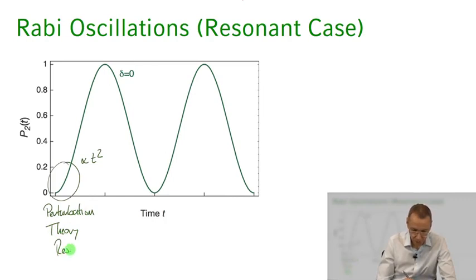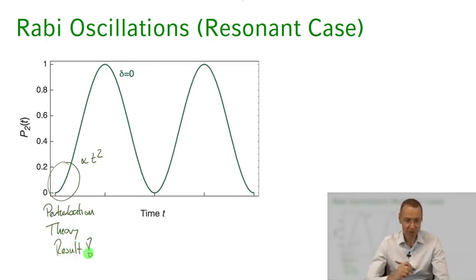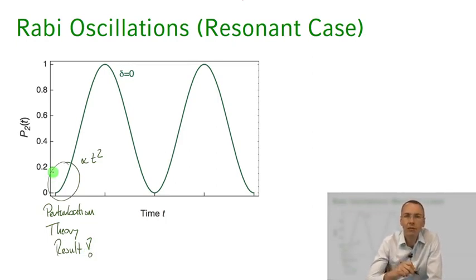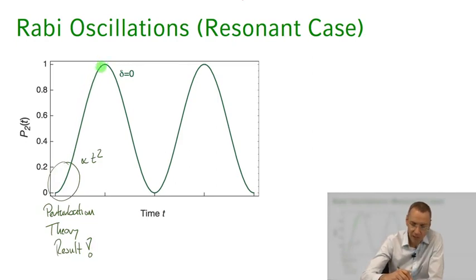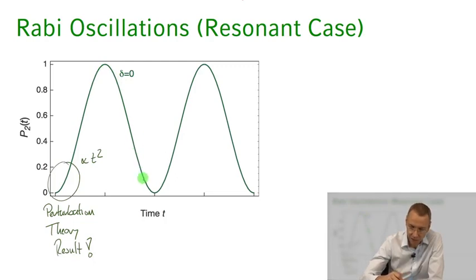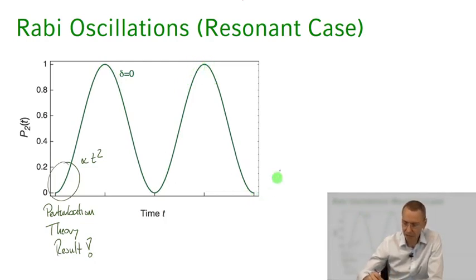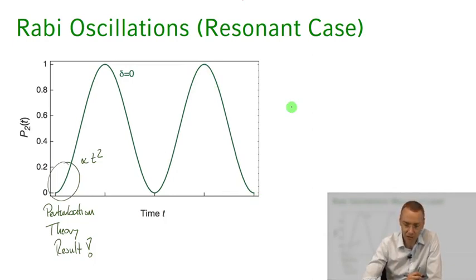For short times we recover the perturbation theory result, but for longer times something dramatically different is happening. The excited state population does not grow anymore — it actually saturates with everything in the excited state, and then the atom transfers back to the ground state. The excited state amplitude decreases, then everything is back in the ground state, and then I excite the atom back to the excited state, back to the ground state, back to the excited state — all of this happening at the oscillation frequency of the light field.